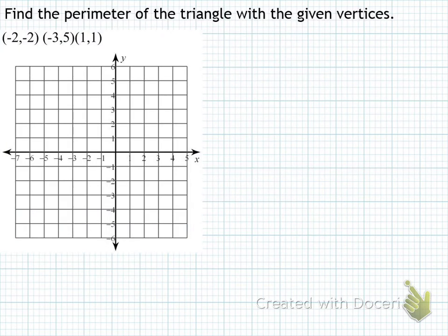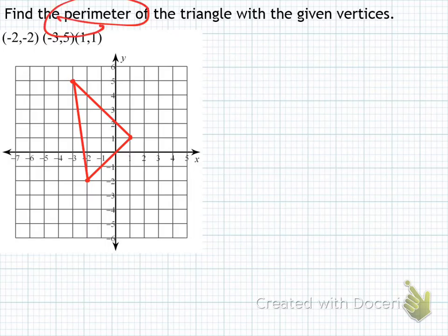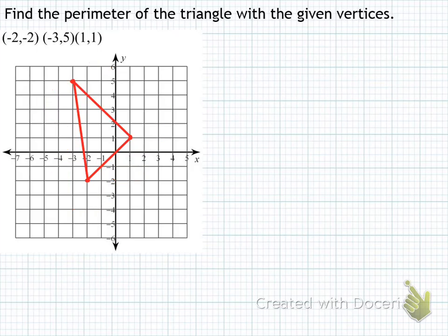What I had students do to start out was think about what we've already learned this week. Using those skills, I wanted them to figure out how to find the perimeter of a triangle with these as the vertices. The first thing they should have realized was to plot these points and then sketch the lines for the sides of the triangle. In order to find the perimeter, you need to add up the lengths of the sides, so they need to find the length of each side.